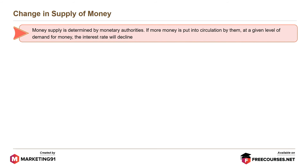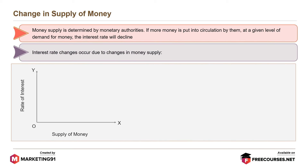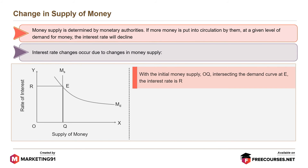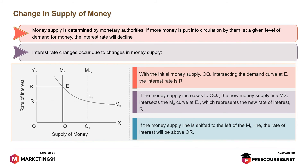Money supply is determined by monetary authorities. If more money is put into circulation at a given level of demand for money, the interest rate will decline. Here, the x-axis is for supply of money and the y-axis is for the rate of interest. When the initial money supply, OQ, intersects the demand curve at E, the interest rate is R. If the money supply increases to OQ1, the new money supply line is MS1, which intersects with the MD curve at E1, representing the new rate of interest, R1. If the money supply line is shifted to the left of the MS line, the rate of interest will be above OR.